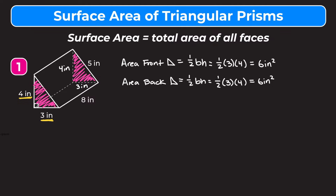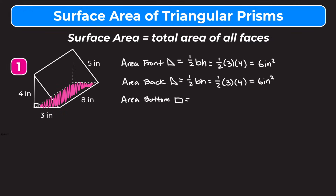The area of each of the two triangular faces is six inches squared. Now let's find the area of the bottom rectangle. To find the area of a rectangle we do length times width. Our length is eight inches and our width is three inches, so eight times three gives us an area of 24 inches squared.